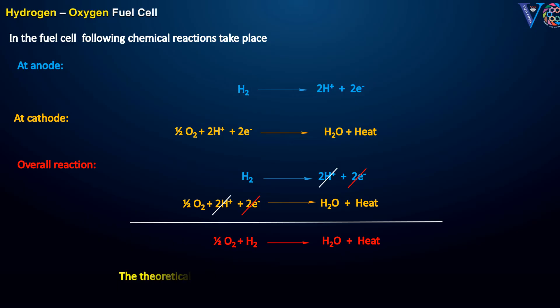The theoretical voltage of a fuel cell of this type is about 1.2 volts. A fuel cell should have the following characteristics.